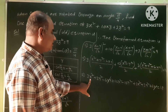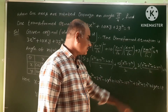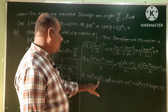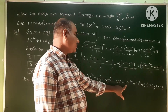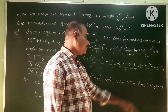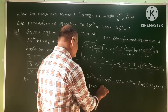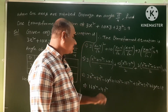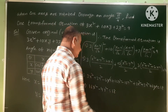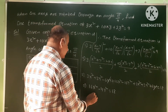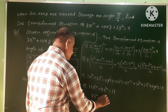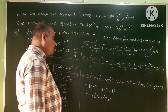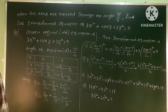Collecting like terms: X² terms: 3+10+3 = 16X²; Y² terms: 3−10+3 = −4Y²... simplifying further gives 8X² − 2Y² = 9. This is the required transformed equation. The answer is 8X² − 2Y² = 9.